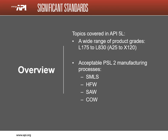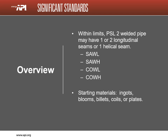Several manufacturing methods are covered. The only methods for PSL 2 are SMLS seamless pipe formed while hot with no weld, HFW high frequency welded pipe with no filler material, SAW submerged arc welded pipe with filler material, and COW combination welded pipe with filler material. Within limits, welded pipe may have one or two straight seams designated with the letter L, or helical — often called spiral. Starting material is steel and may be billets, ingots, blooms, coils, or plates.